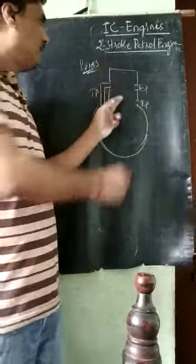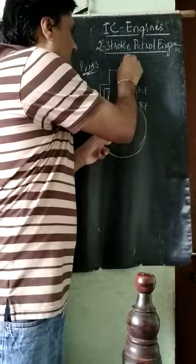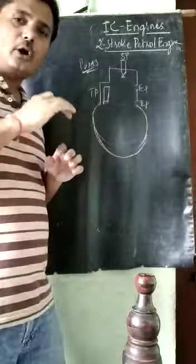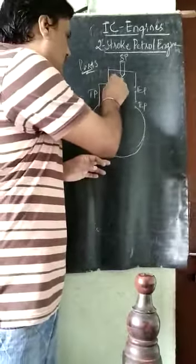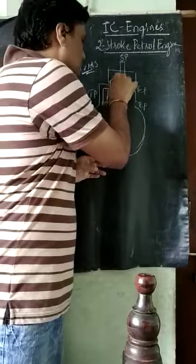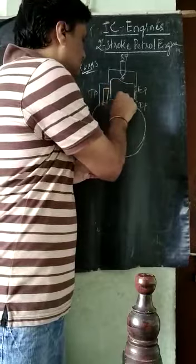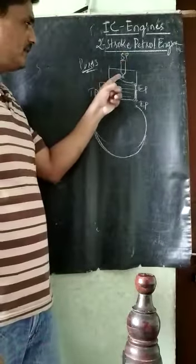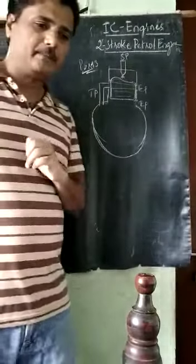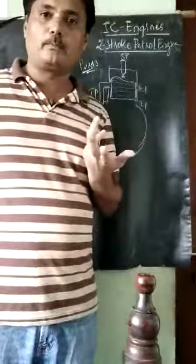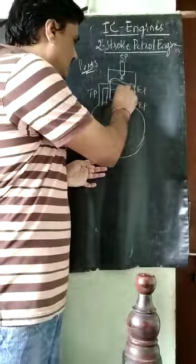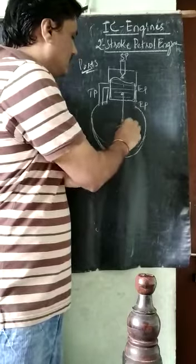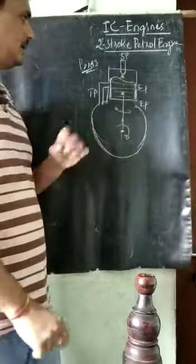Since this is a petrol engine, there is a spark plug (SP). The piston top side has been designed very differently — it has a specially shaped crown. The connecting rod and crank are present as usual; the crank always rotates and the connecting rod oscillates.